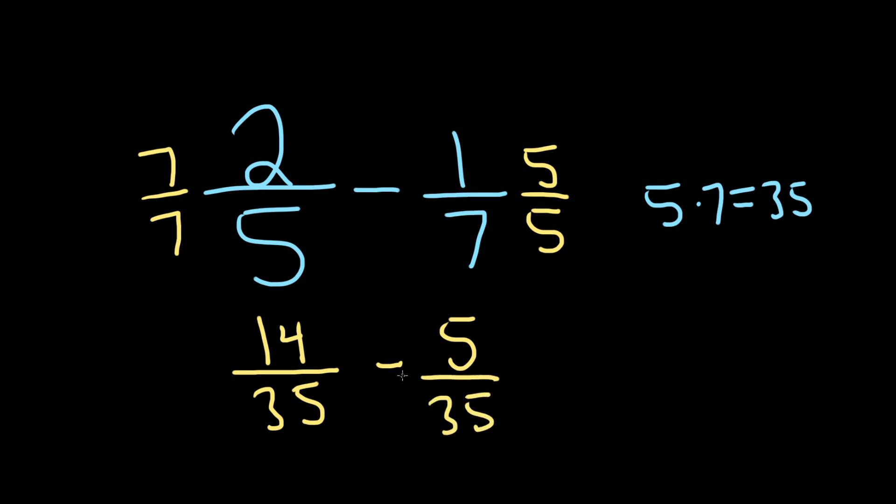And now you can actually perform the subtraction, because the denominators are the same. So 14 minus 5 is equal to 9. So we have 9 over 35. And that would be the final answer. I hope this video has been helpful.